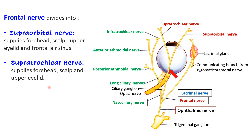In summary, the frontal nerve is the largest branch of the ophthalmic division. It runs straight forward, quite superficially, between the roof of the orbit and the levator palpebrae superioris. In the middle of the orbit it divides into the supraorbital and supratrochlear branches, supplying the upper eyelid, forehead, and anterior part of the scalp. The supraorbital nerve additionally supplies the frontal air sinus.